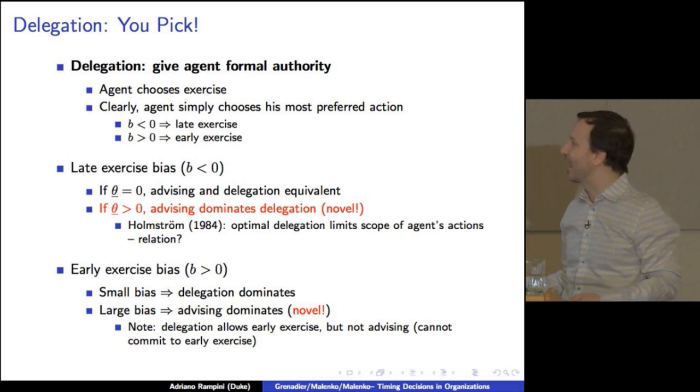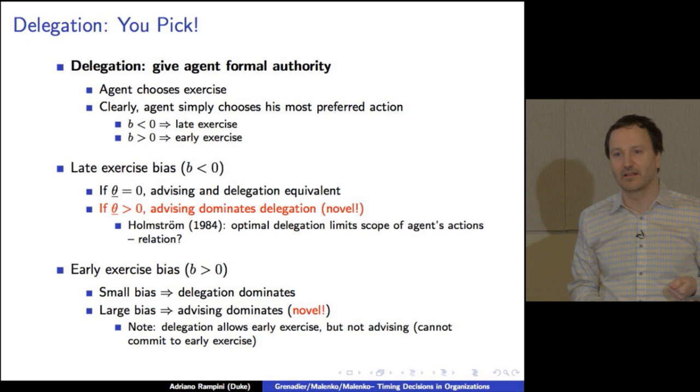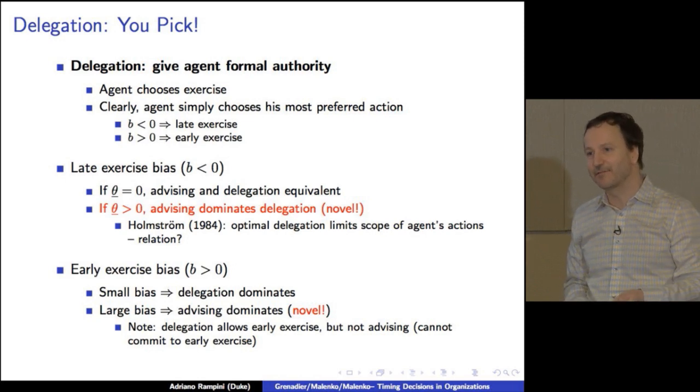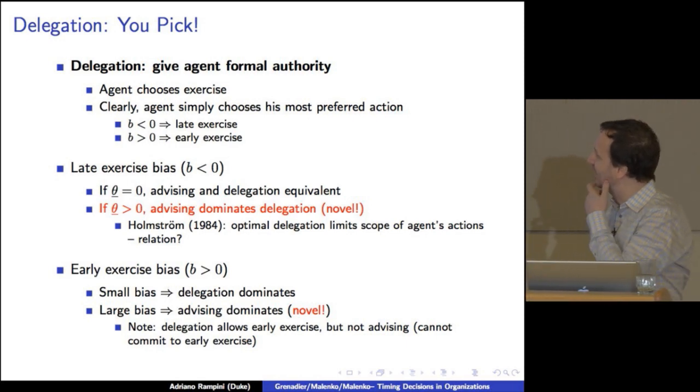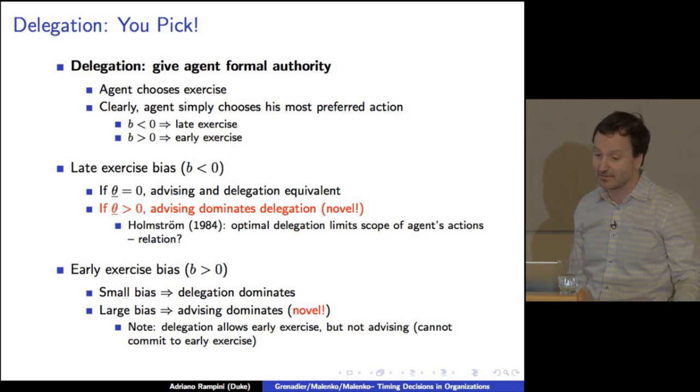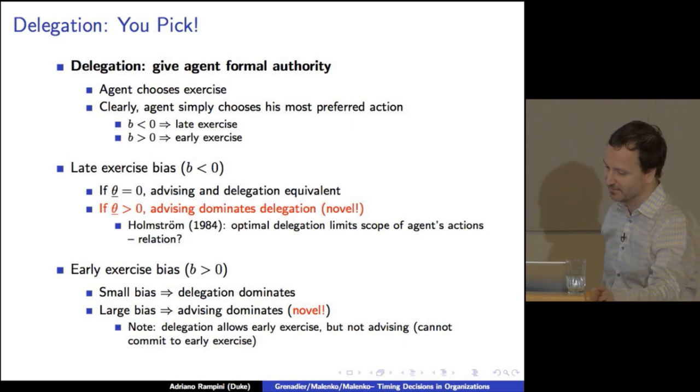With early exercise, again, what happened is when the bias is really small, when the bias is really small, the agent and the principal almost agree, but you can never give the guy a commit to early exercise. But if you delegate, you can. And so that happens to be a delegation actually dominates in that case. When you have a large bias, then advising dominates. And again, that's novel and interesting.